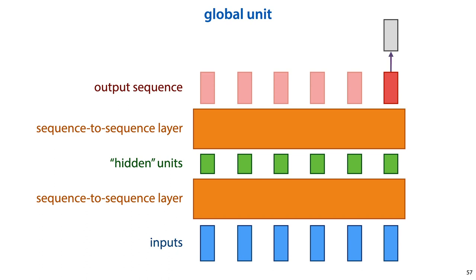If we train the neural network to classify only based on this output, it will hopefully learn to put the right information into this output vector. If you have causal sequence-to-sequence layers, it's important that you use the last vector, since that's the only one that gets to see the whole input sequence.